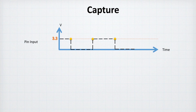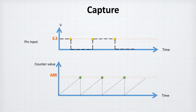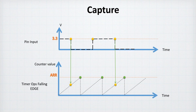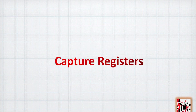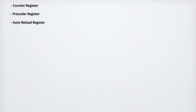The capture is the opposite of compare. If we have a signal with edges — high, low, rising, or falling — we can set up a timer and say we want to work on the falling edge. Each time we detect the falling edge, the timer will capture that moment and store it in the compare capture register. From the register perspective, we will need the counter register, the prescaler register, and the auto reload register as core registers for the primary timer setup.